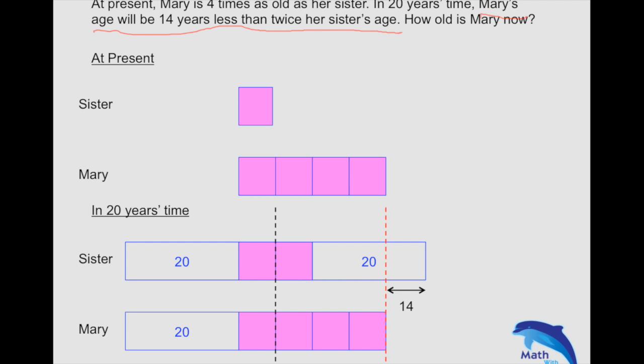There you are. Whatever the difference, right now we can see that is due to the two blocks—that means two units. And these two units we can now equate to 20 minus 14. So right now we can solve our units.